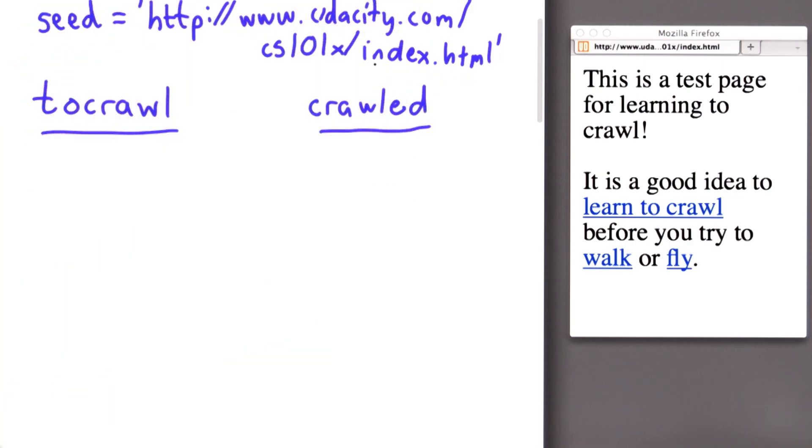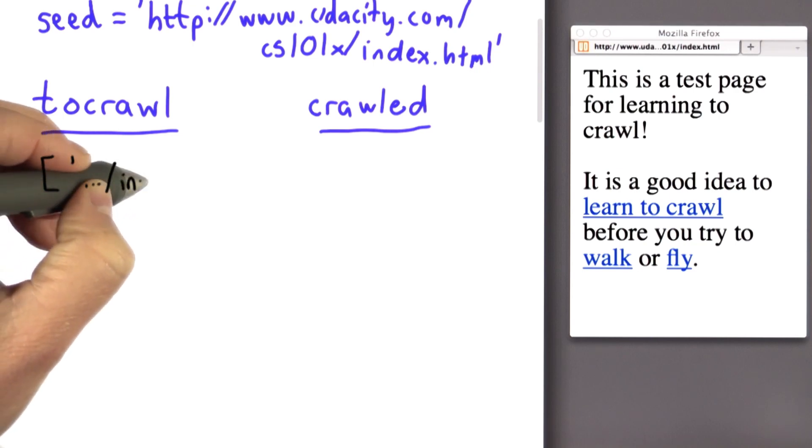And I'm going to stop writing out the full URLs, just writing out the final part. Because all the pages we crawl will be on our test site. So to crawl will be the list containing just one element, the index.html page.